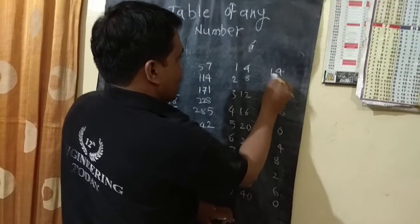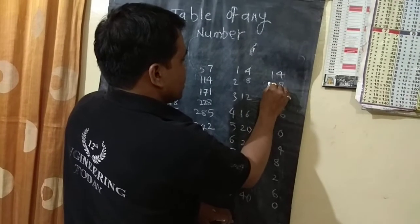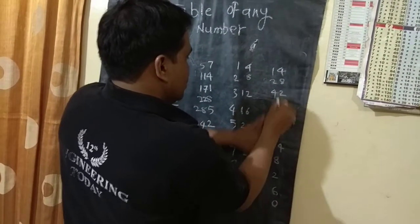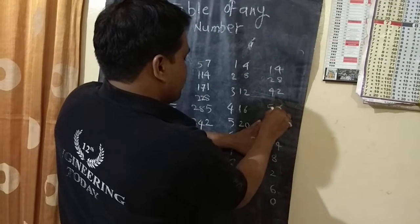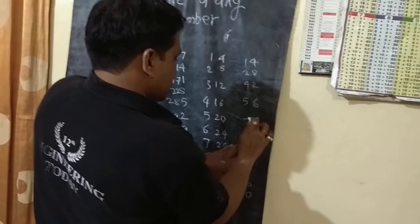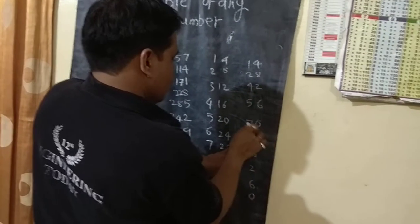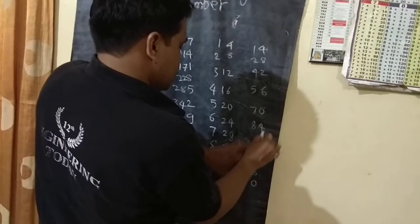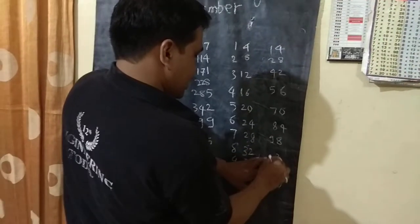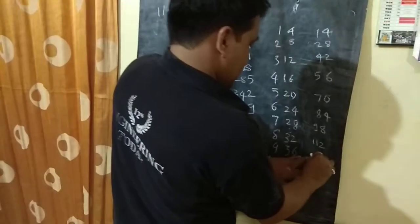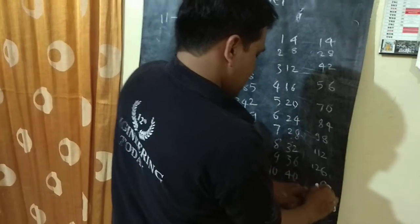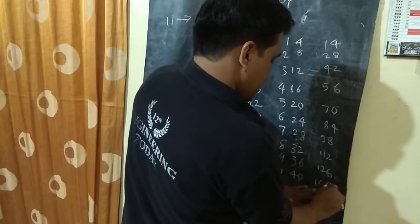So: 1 plus 0 is 1, 2 plus 0 is 2, 3 plus 1 is 4, 4 plus 1 is 5, 5 plus 2 is 7, 6 plus 2 is 8, 7 plus 2 is 9, 8 plus 3 is 11, 9 plus 3 is 12, 10 plus 4 is 14.